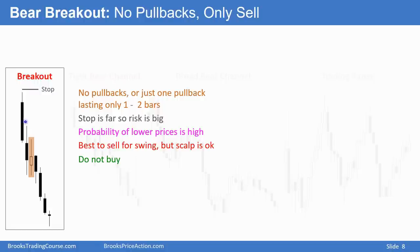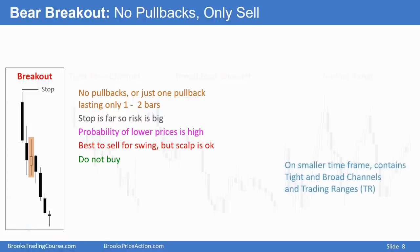On a smaller timeframe chart there are pullbacks and it's a tight bear channel. And if you go to an even higher timeframe chart it would be a broad bear channel and a trading range. And on a high enough timeframe chart there would even be bull trends in it. So let's say this is a weekly chart — if I looked at a 60-minute chart, there was probably a bull trend in here lasting two or three days. On a small enough timeframe chart the market may even be always-in-long, but if this is the chart you're trading, you only want to sell.